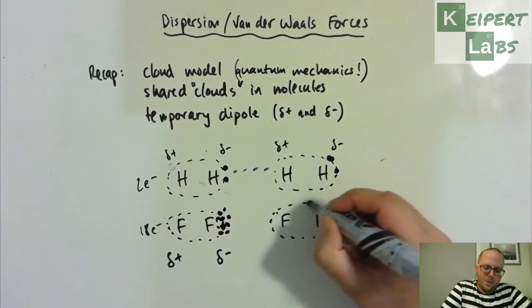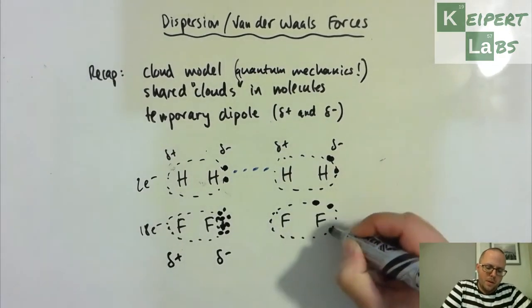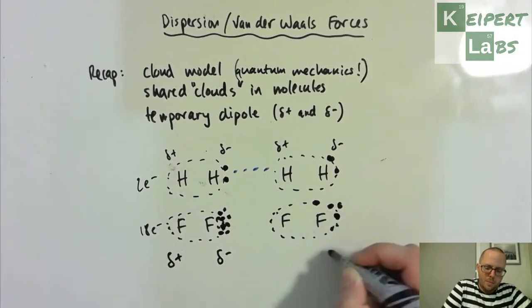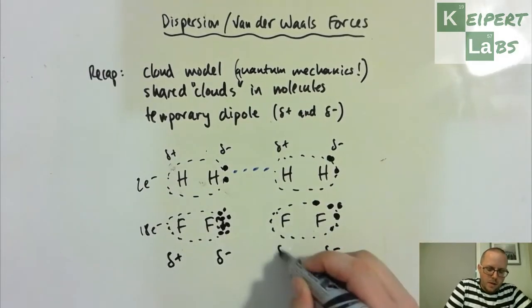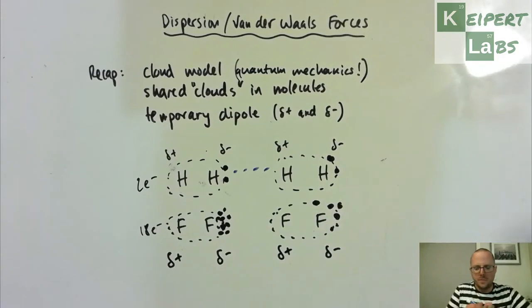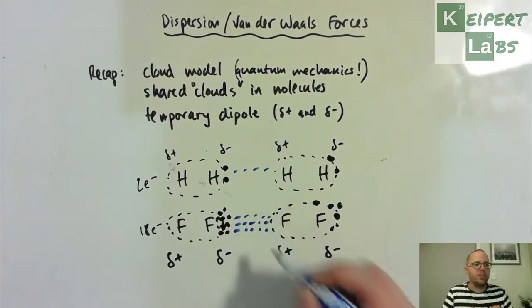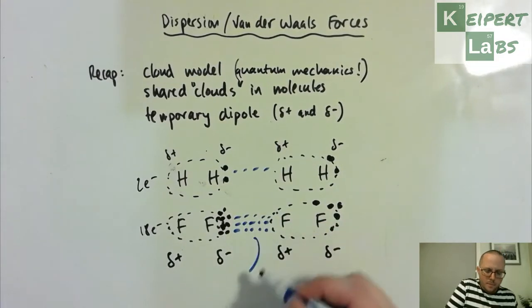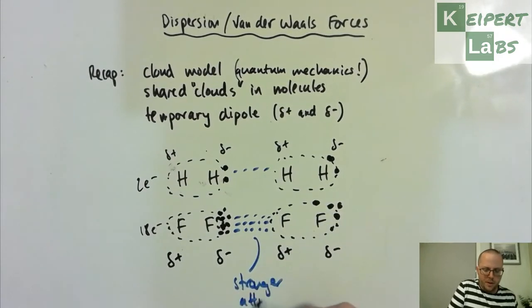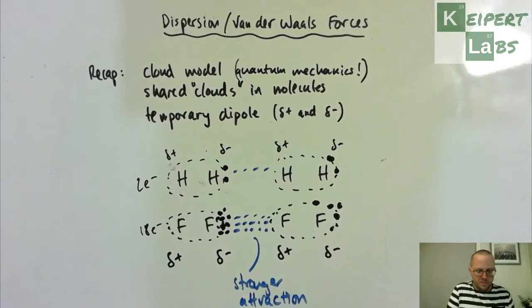If we get the same sort of thing where there's another big negative charge down this end and a big positive charge here, then let's say that the fact that I've done more lines here represents a stronger attraction between these two molecules.